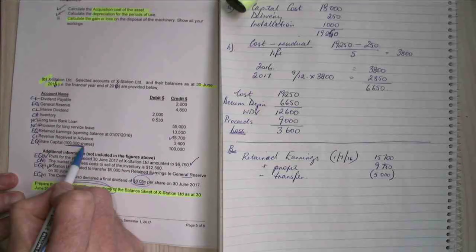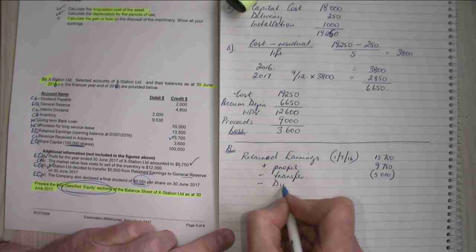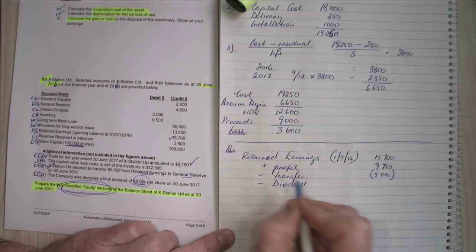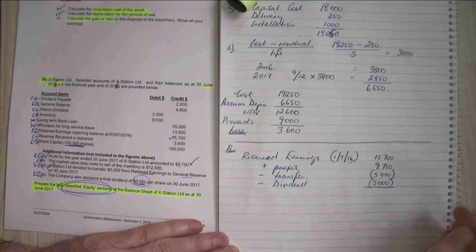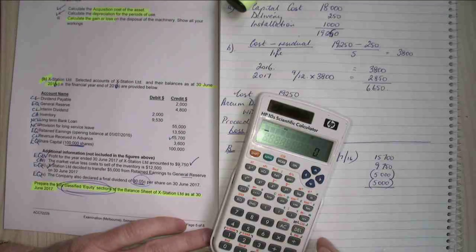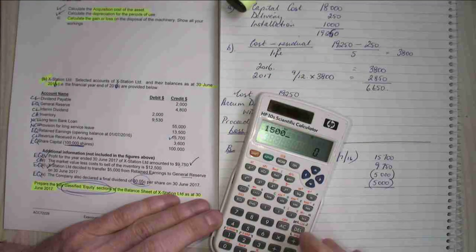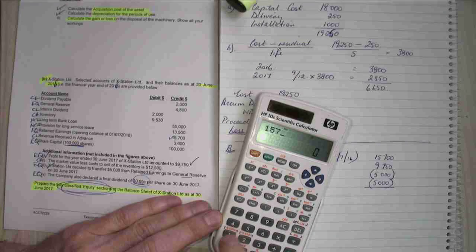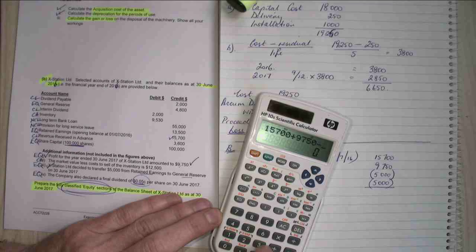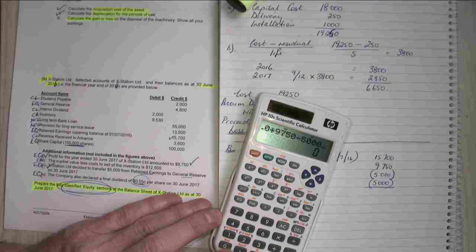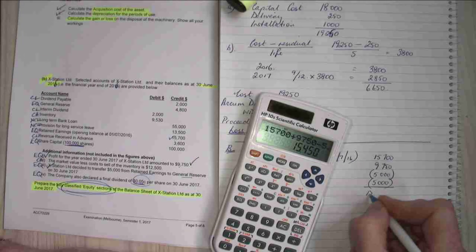The company also declared a final dividend of $0.05 per share. Now that $0.05 per share is going to pertain to these 100,000 shares. So that's going to give me a dividend which I'm going to take out of my retained earnings of $5,000. Okay, so what does that give me? I've got $15,700 plus my profit of $9,750 minus my transfer to general reserves minus my dividend, which gives me $15,450.